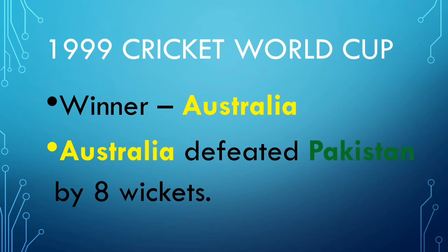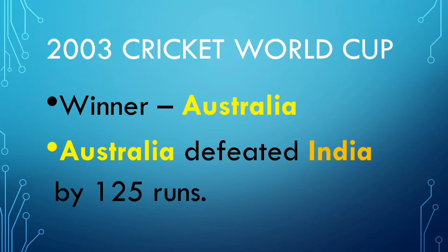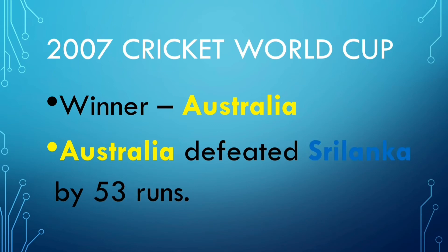1999 Cricket World Cup Winner: Australia. Australia defeated Pakistan by 8 wickets. 2003 Cricket World Cup Winner: Australia. Australia defeated India by 125 runs. 2007 Cricket World Cup Winner: Australia. Australia defeated Sri Lanka by 53 runs.